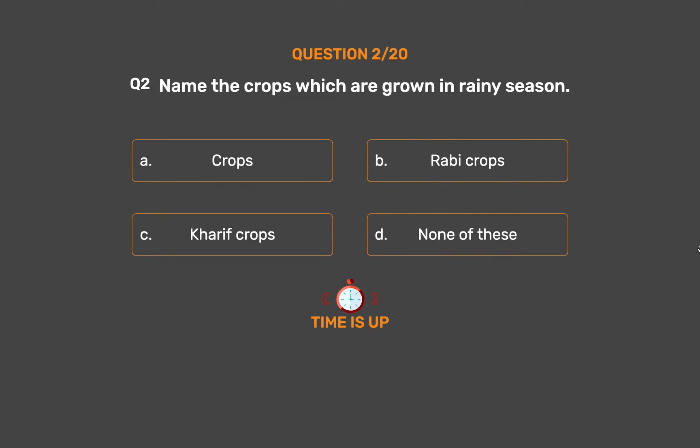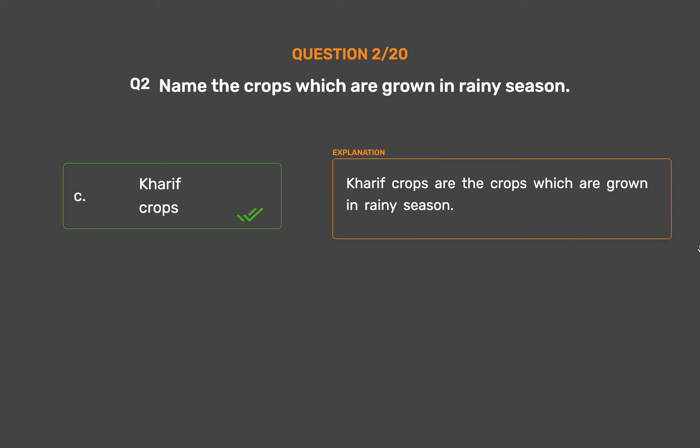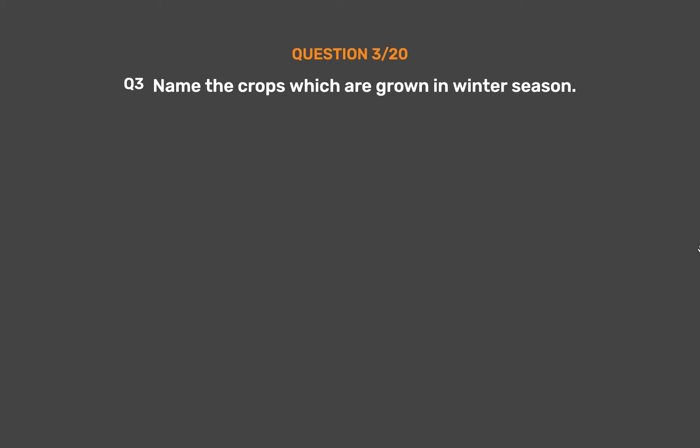The correct answer is Option C: Kharif crops. Kharif crops are the crops which are grown in the rainy season.